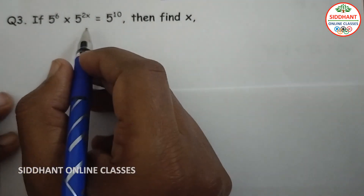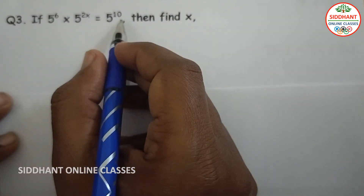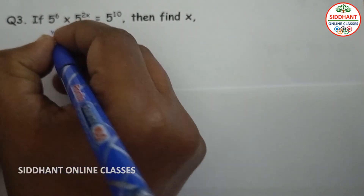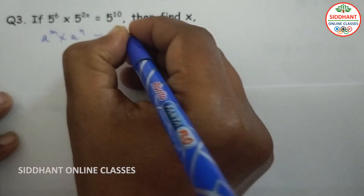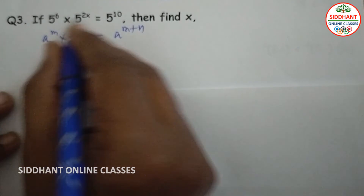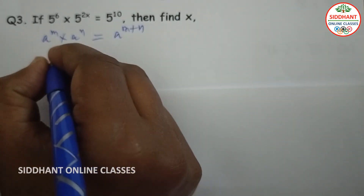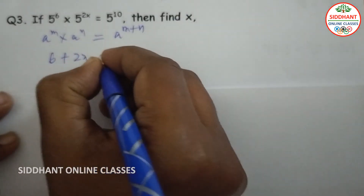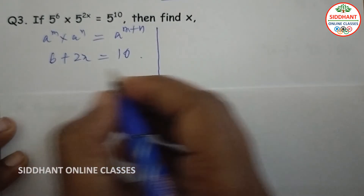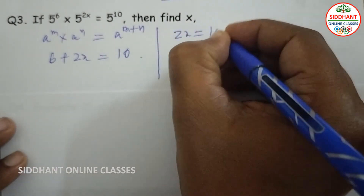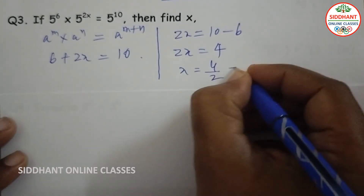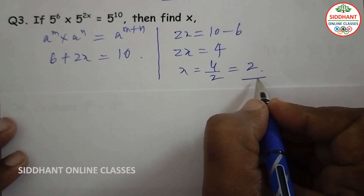Question number 3: if 5 to the power of 6 into 5 to the power of 2x equals 5 to the power of 10, then find x. Bases are same, so using a to the power of m into a to the power of n equals a to the power of m plus n, we add the powers and set equal to 10. That means 6 plus 2x equals 10, so 2x equals 4, and x equals 4 divided by 2, which is 2.